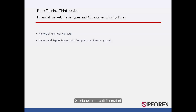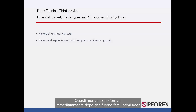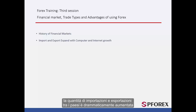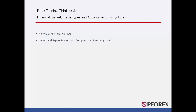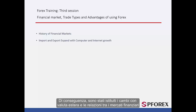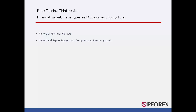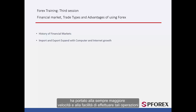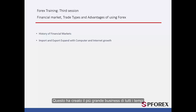History of Financial Markets: These markets were formed immediately after the first ever trade was made. With the rapid technological progress and industry expansion, the amount of imports and exports between countries has dramatically increased. As a result, the core of foreign exchange and financial market relations were established. The beginning of the computer age and the birth of the internet led to the ever increasing speed and ease of making these transactions, making it a bigger business than ever.